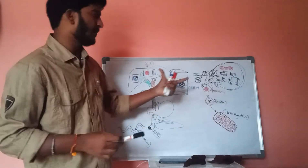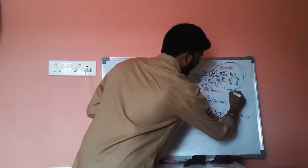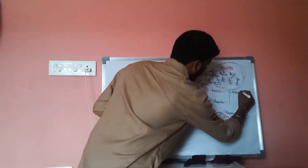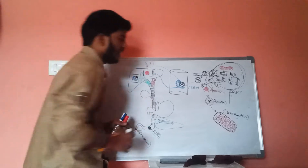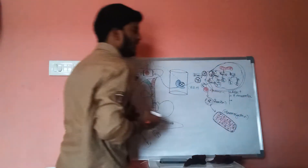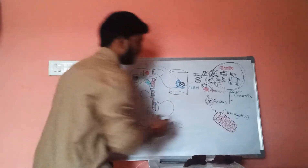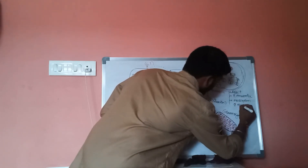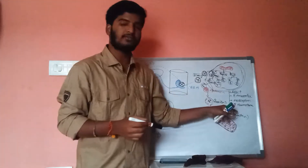What are the conditions which result in hyperbilirubinemia? First condition: if there is more rupture of RBC, it results in hyperbilirubinemia. Second condition: whenever hemolytic anemia occurs, it results in hyperbilirubinemia. Third condition: absorption of hematoma — these are the three conditions which result in increase of hyperbilirubinemia.